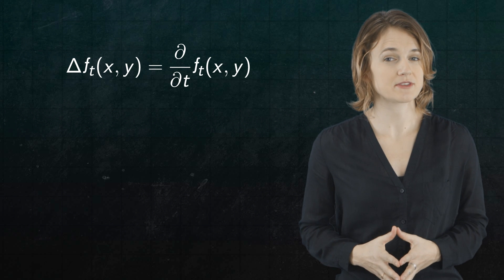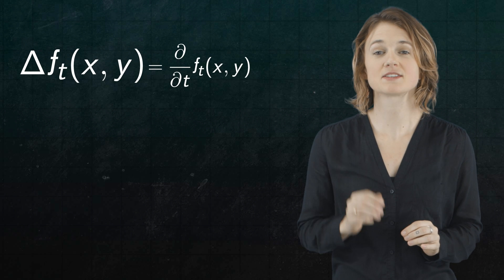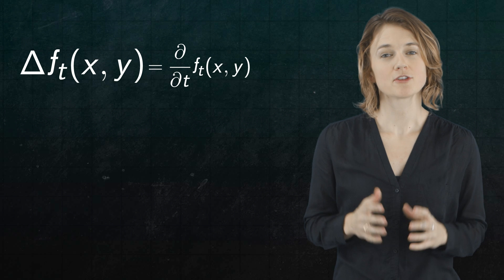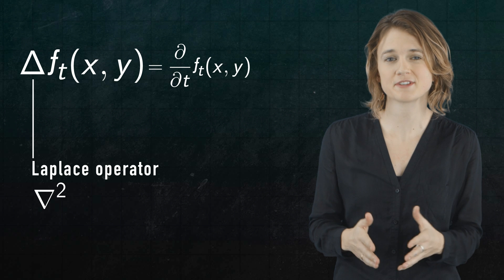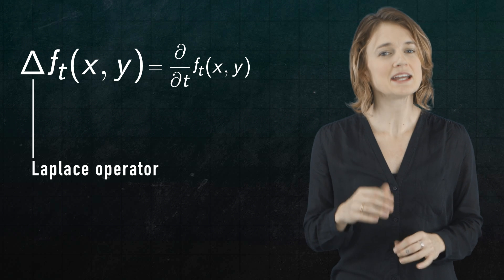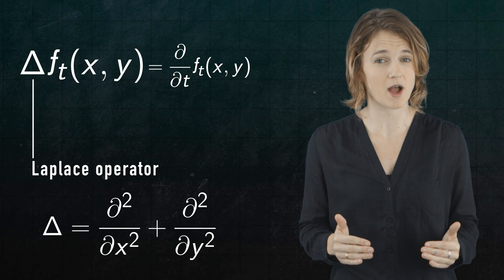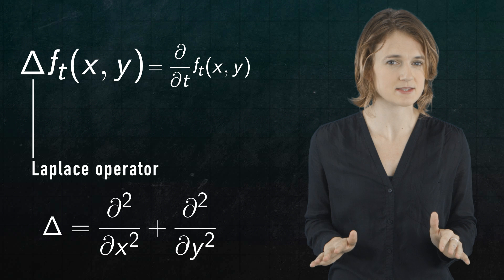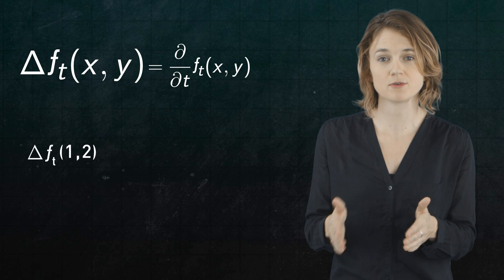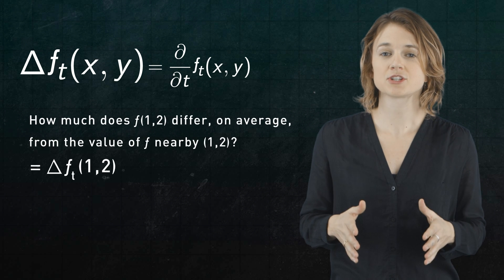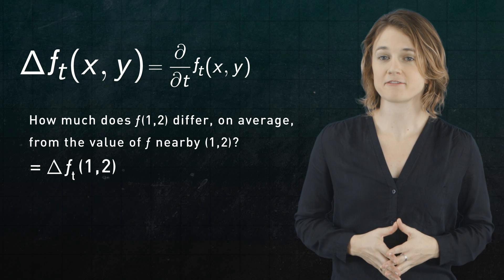To start, let's break down the heat equation by examining the left-hand side and then the right-hand side. The left-hand side is the Laplacian of f. The triangle is called the Laplace operator — it's often written as an upside-down triangle squared, especially in physics, but that's just notation. Technically it's defined as the second derivative with respect to x plus the second derivative with respect to y, but we're going to interpret it without using calculus. The Laplacian of f at a fixed point — for example, (1, 2) — is the answer to the question: how much does f(1, 2) differ on average from the values of f nearby (1, 2)?